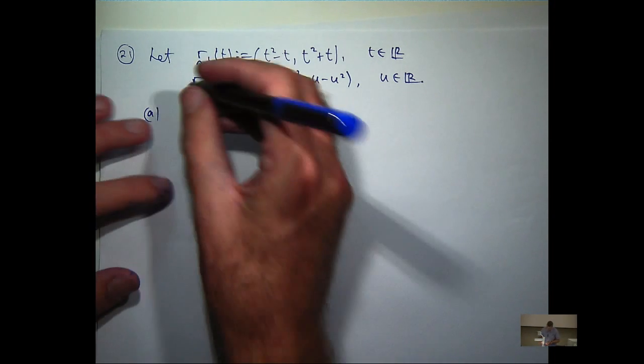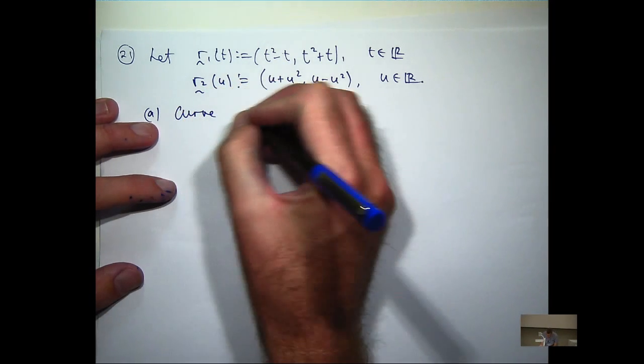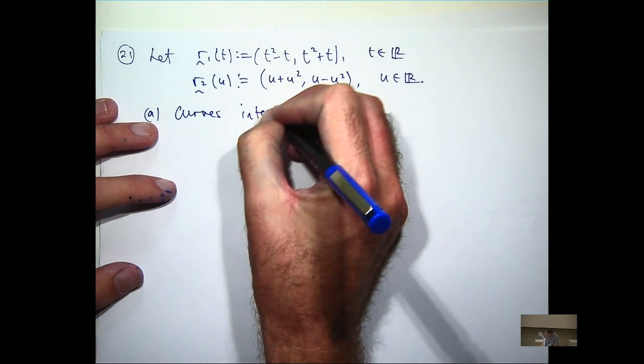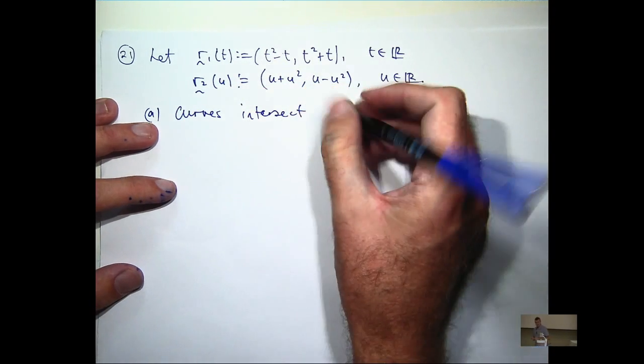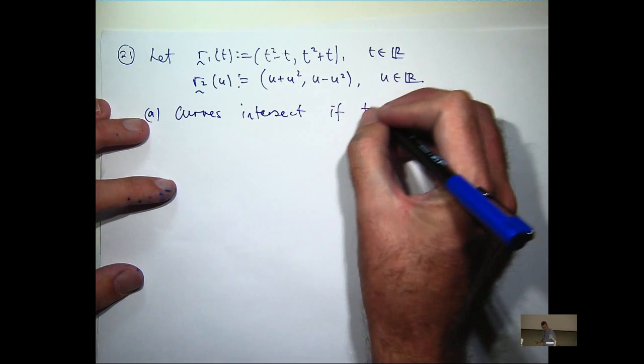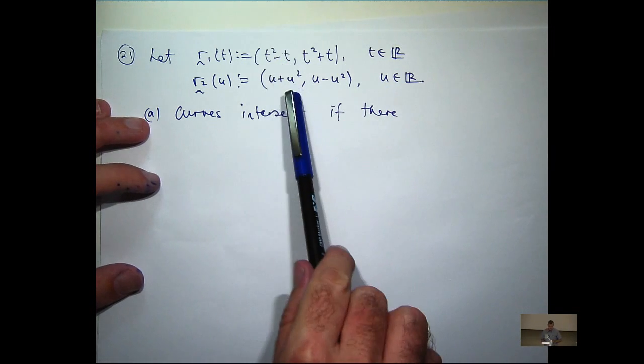So, curves intersect if there are values of t and values of u such that the components are equal.